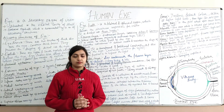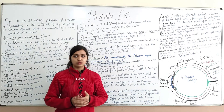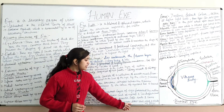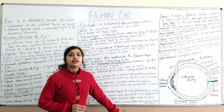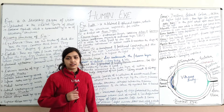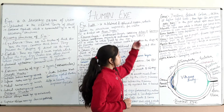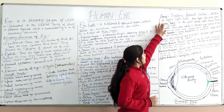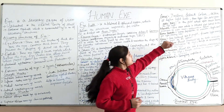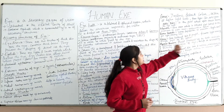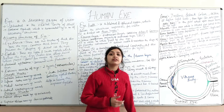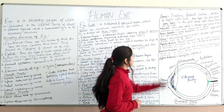There are approximately 120 million rod cells and about six to seven million cone cells in the retina. Rod cells are light sensors that detect black, white, and shades of gray, and are responsible for night vision as they work in less intense light. Cone cells are highly active at higher light levels and are responsible for detecting bright colors — blue, red, and green.